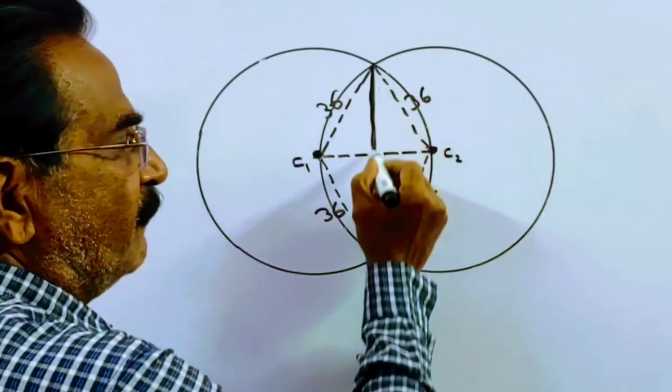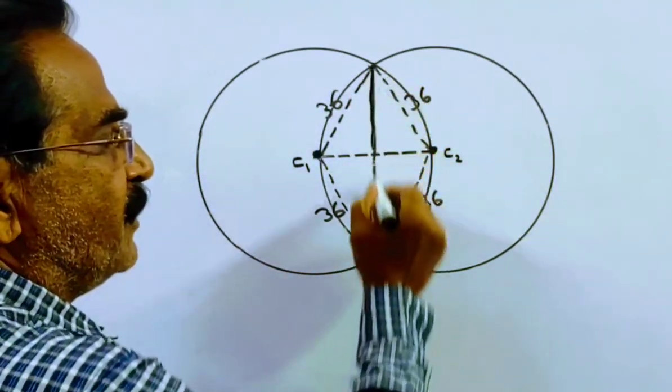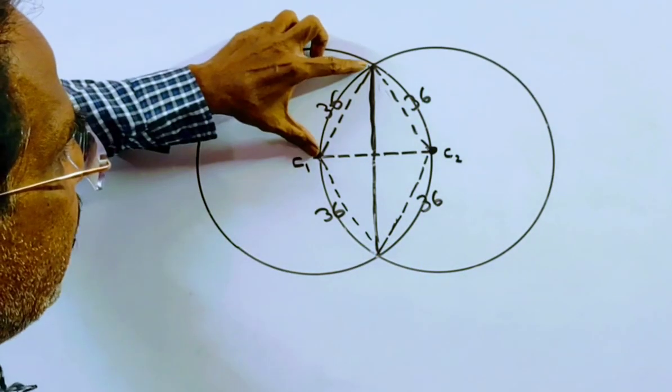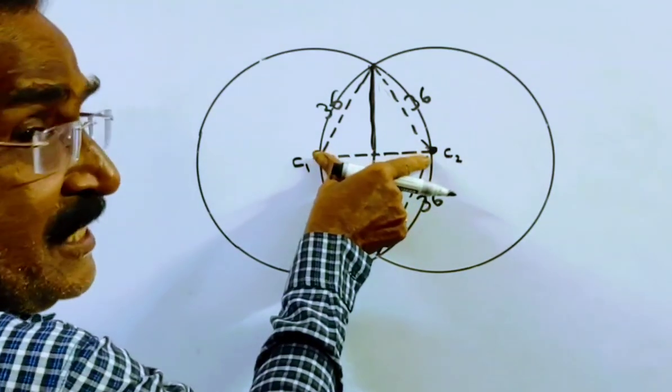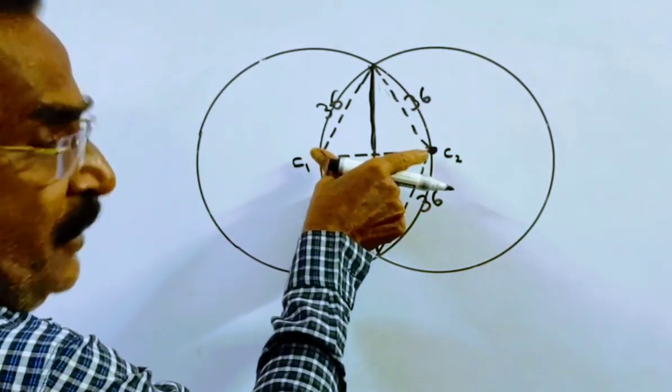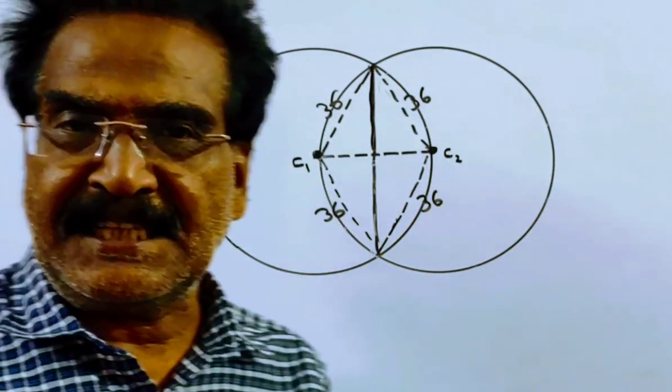This is the length of the common chord. And these are the radii—this is the radius, this is the radius, this is the radius, and this is also the radius of the circle, 36 centimeters.